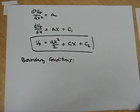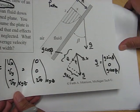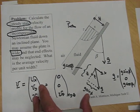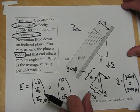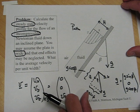To figure out the boundary conditions, we have to go back to the problem and find at two locations in the flow what are the values of the velocity. And this takes a little bit of practice.